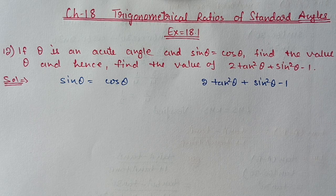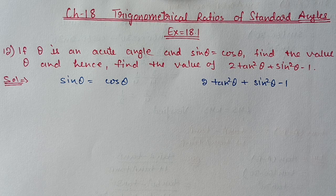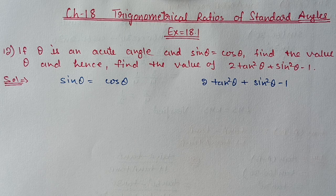Hello students, we are doing Chapter 18: Trigonometrical Ratios of Standard Angles, Exercise 18.1. In today's video we are starting from Question 12. If theta is an acute angle and sin theta is equal to cos theta, find the value of theta and hence find the value of 2 tan squared theta plus sin squared theta minus 1.